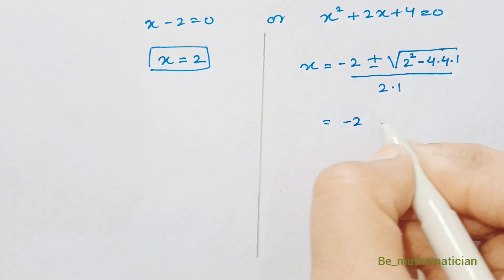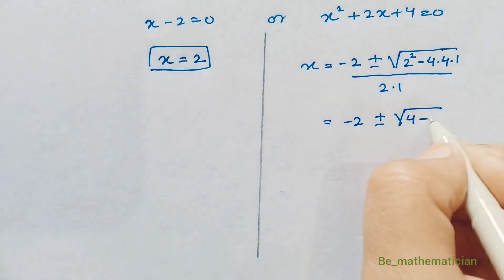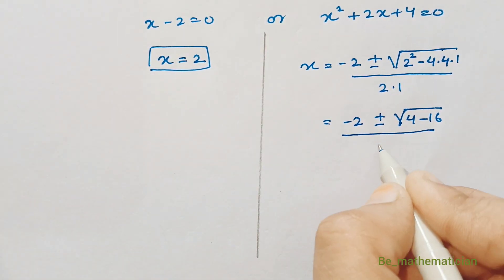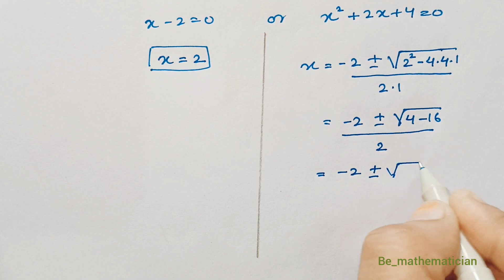That is equal to minus 2 plus or minus under root of 4 minus 16 divided by 2. Equal to minus 2 plus or minus under root of minus 12 divided by 2.